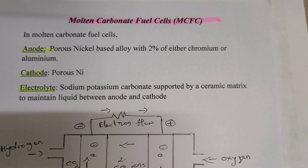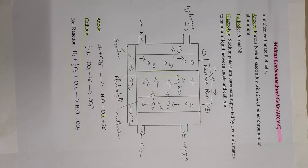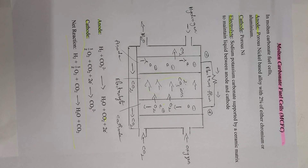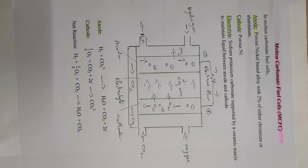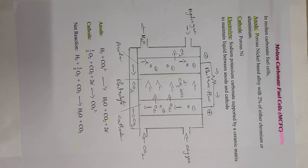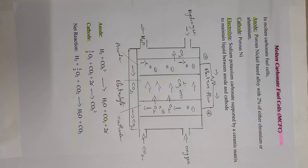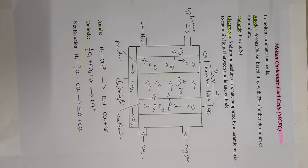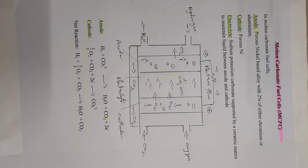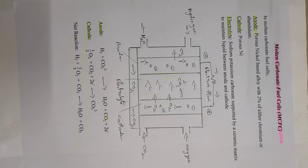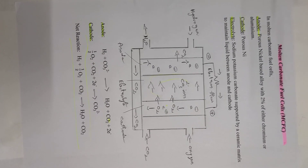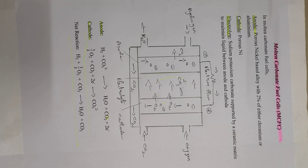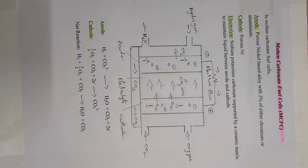So that is the molten carbonate fuel cell — covering the anode, cathode, electrolyte, anodic half-cell reaction, cathodic half-cell reaction, and the net reaction. Thank you students for watching.